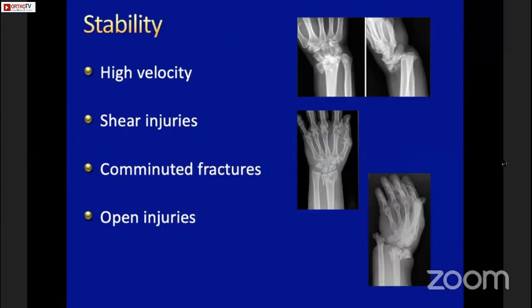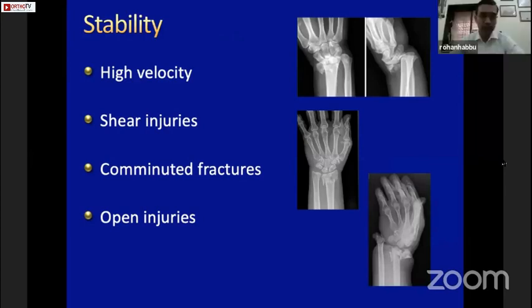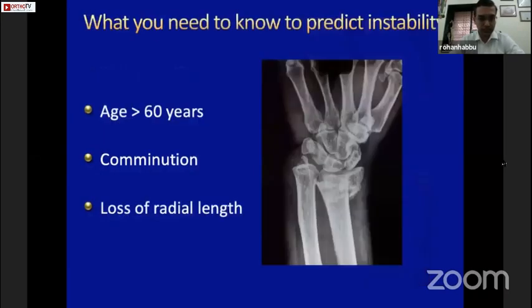If it's a high velocity injury or an open injury, almost always these fractures are unstable — by unstable, we mean we need to provide stability by fixing it. Shear fractures or comminuted fractures can also decrease stability, and that's what you need to assess.